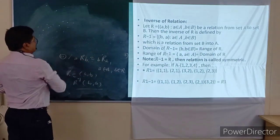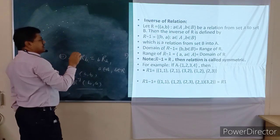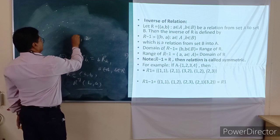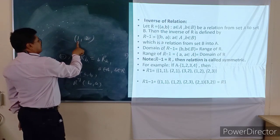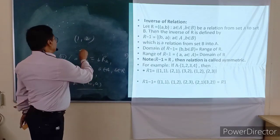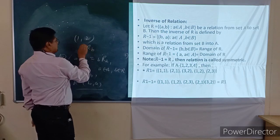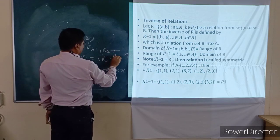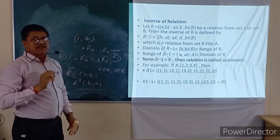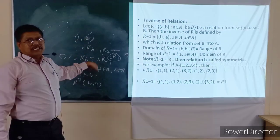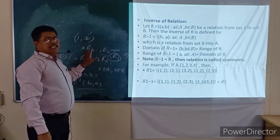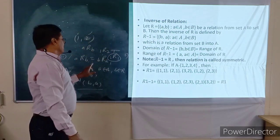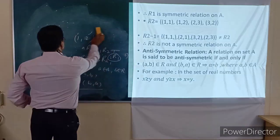One more example: suppose the relation is 'is less than', and we have numbers 1 and 2. One is related to two by the relation 'is less than', so A is related to B. But the converse — that two is related to one — is not true, because two is not less than one. So the relation 'is less than' is not a symmetric relation. A relation is symmetric only if A related to B also implies B is related to A by the same relation.